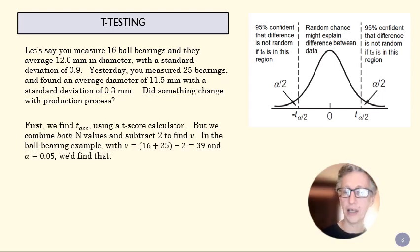So we start by finding T acceptable, just like we did with our outlier process. And we use a T-score calculator to do that. But our N here is going to be both groups. So 16 data points the first day, 25 the second day, and then we're going to subtract 2 because we have two sets here. And we end up with a degrees of freedom of 39. So we plug that into our calculator to find T-acceptable with a nu of 39 and a confidence level of 95%, and we get a T-acceptable of 2.02.